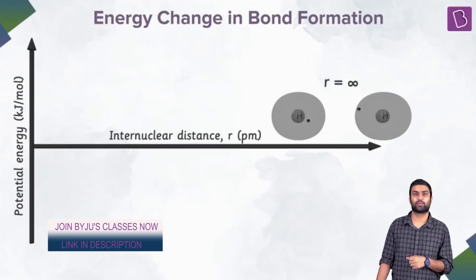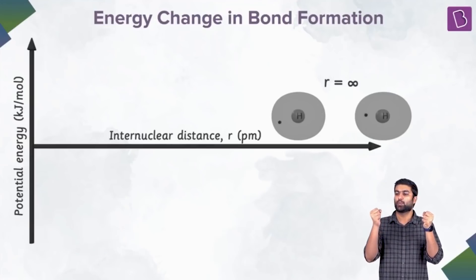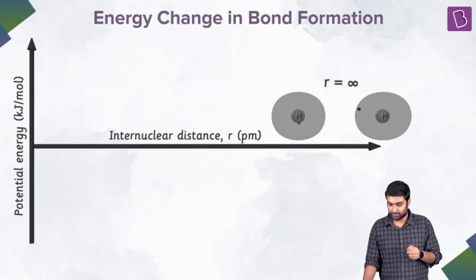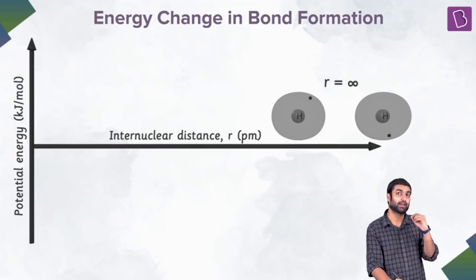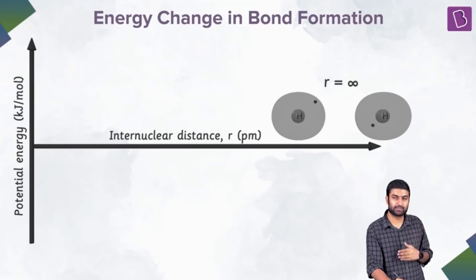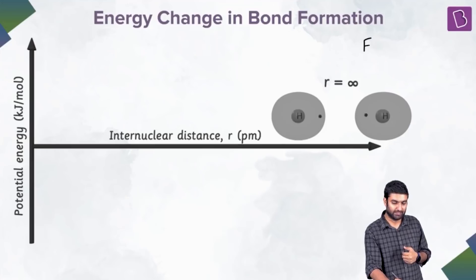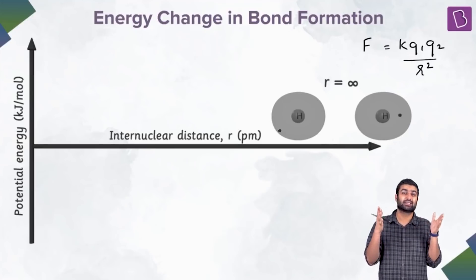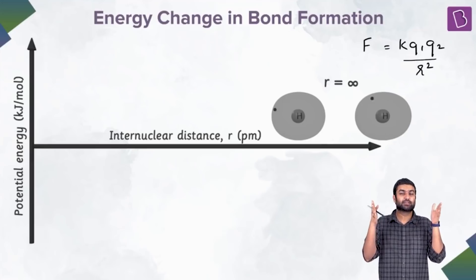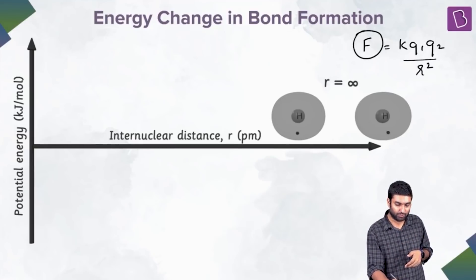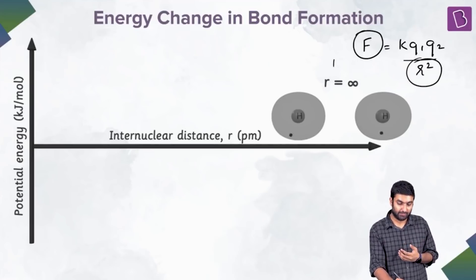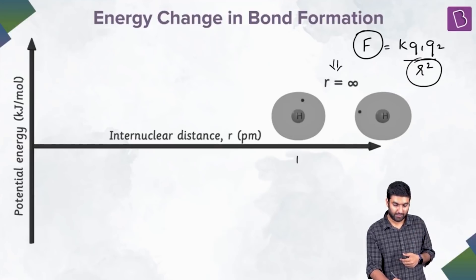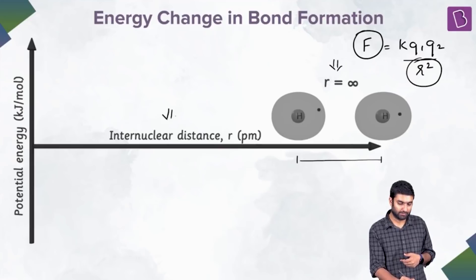Now, how is it important? What we do is we basically consider these two hydrogen atoms and we start at a place wherein these two are not experiencing any force because of each other. Theoretically, if they are not experiencing any force on each other, we know that force is equals to k·q1·q2/r². So theoretically, if force is zero, then r has to be theoretically infinity. And that is why we have r listed at infinity here — the inter-nuclear distance.